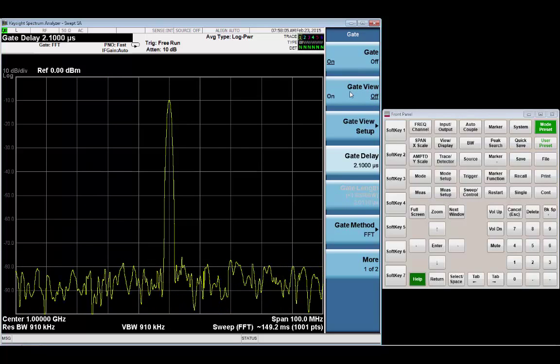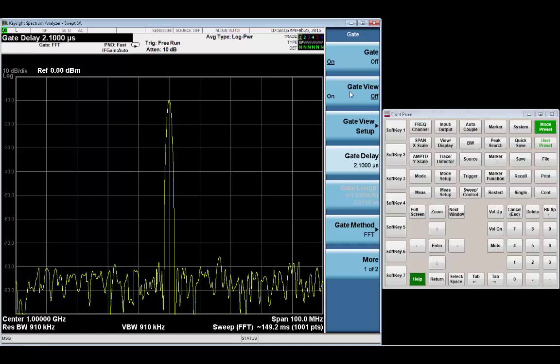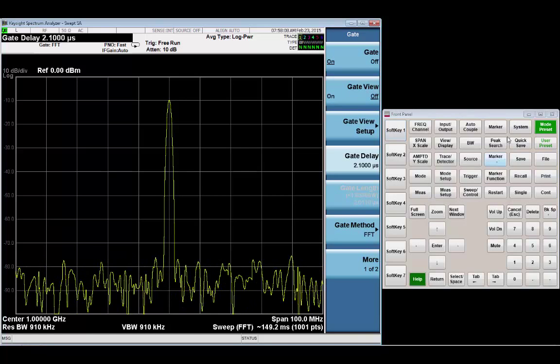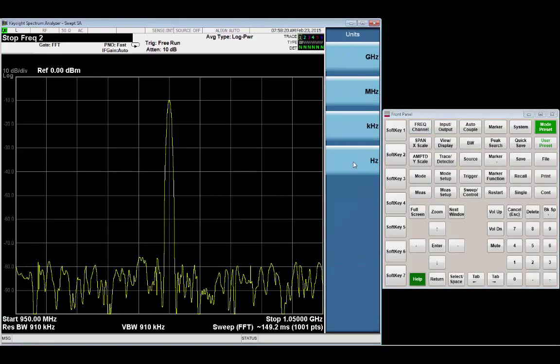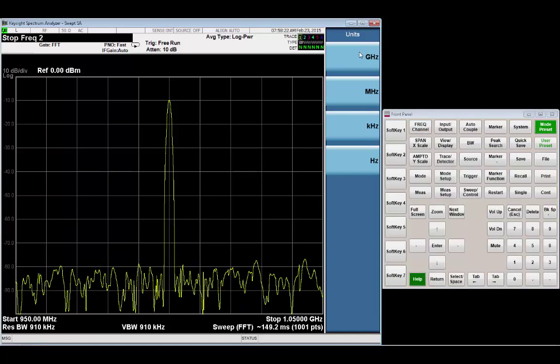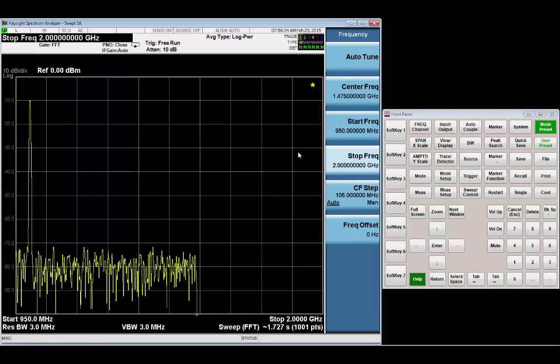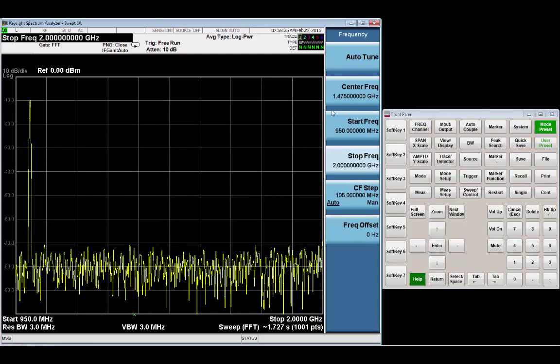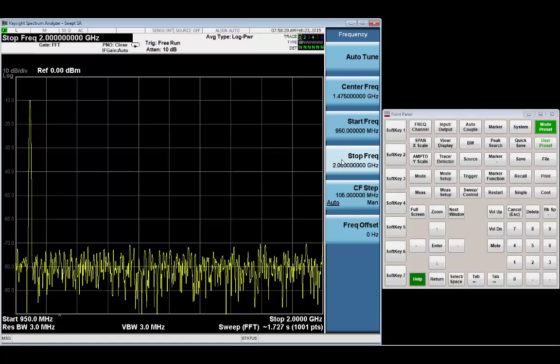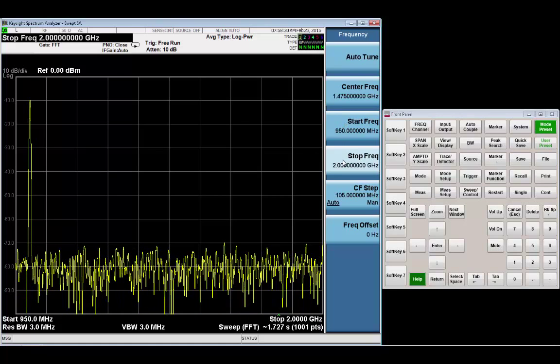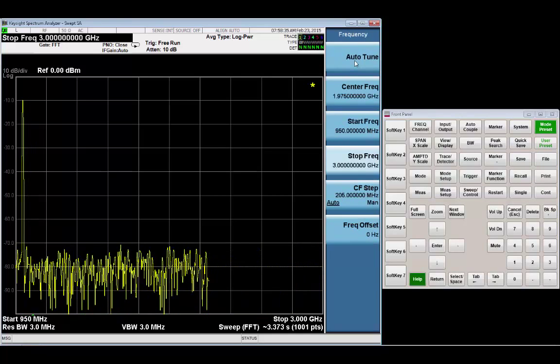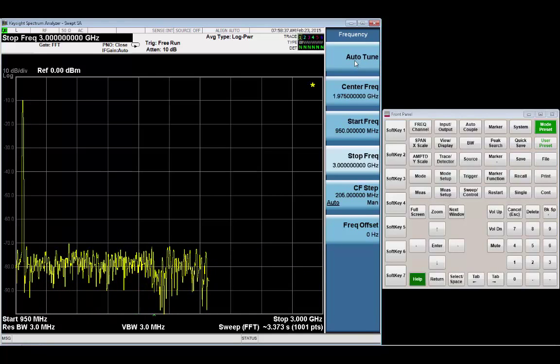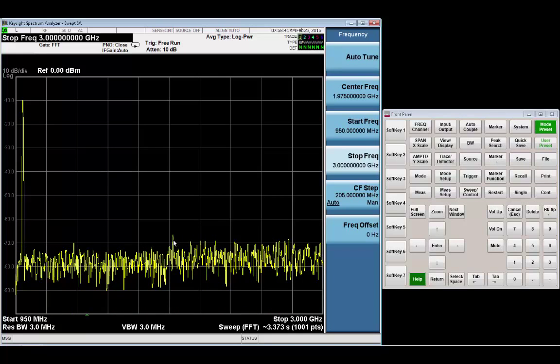Now that I have the measurement set up, and I'm gating correctly, and I'm using external trigger, I can go into my frequency controls. And I can change my stop frequency to 2 gigahertz and still get a good, clean measurement. Which will allow me to view the spectral content at higher frequencies. And I can even go out to 3 gigahertz. And you can see the second harmonic right here.